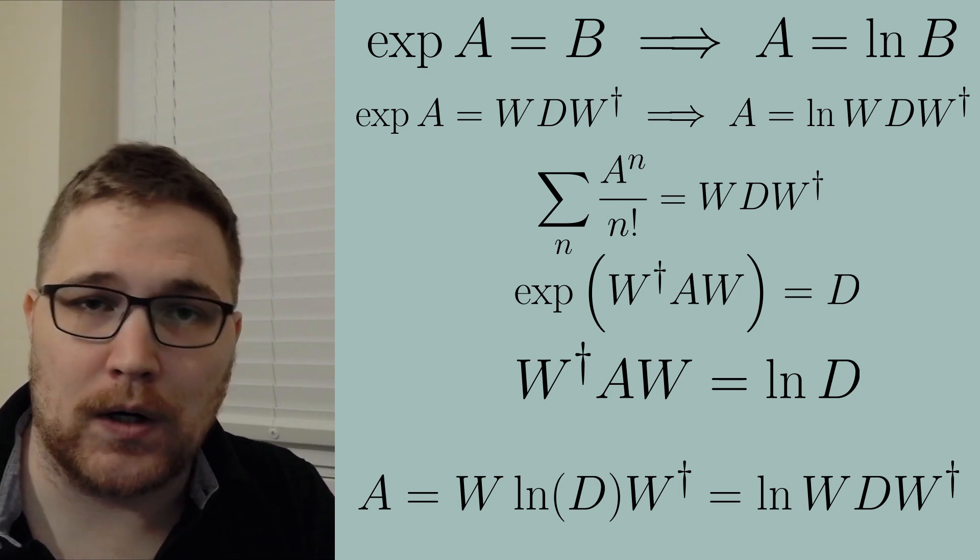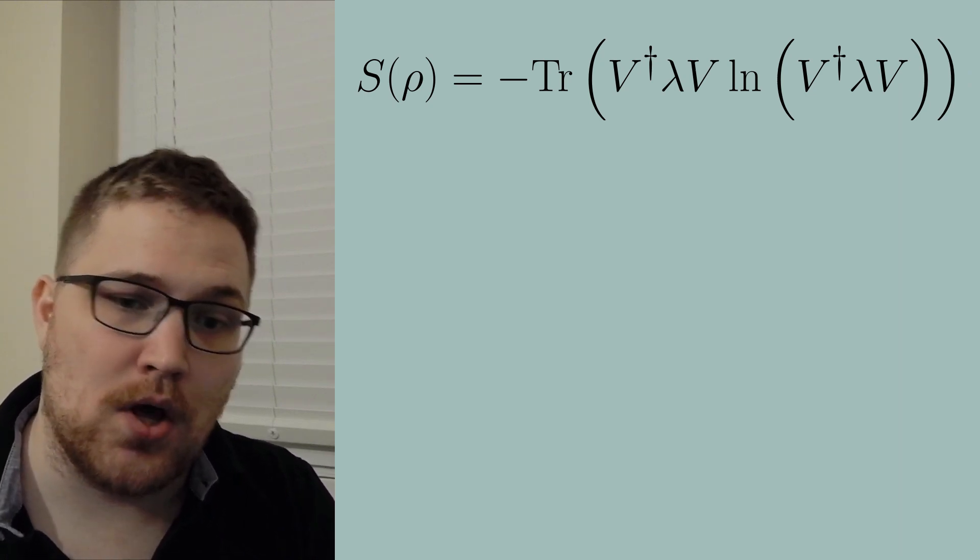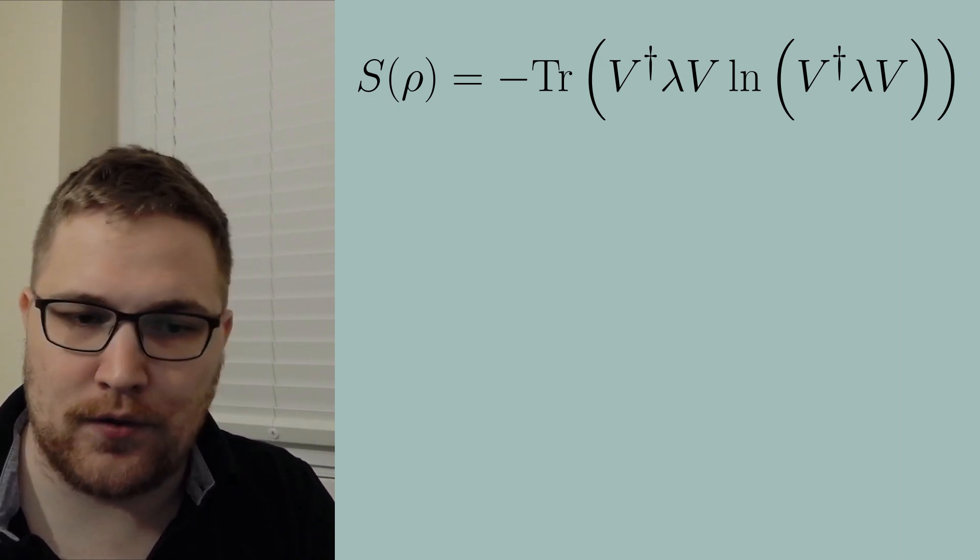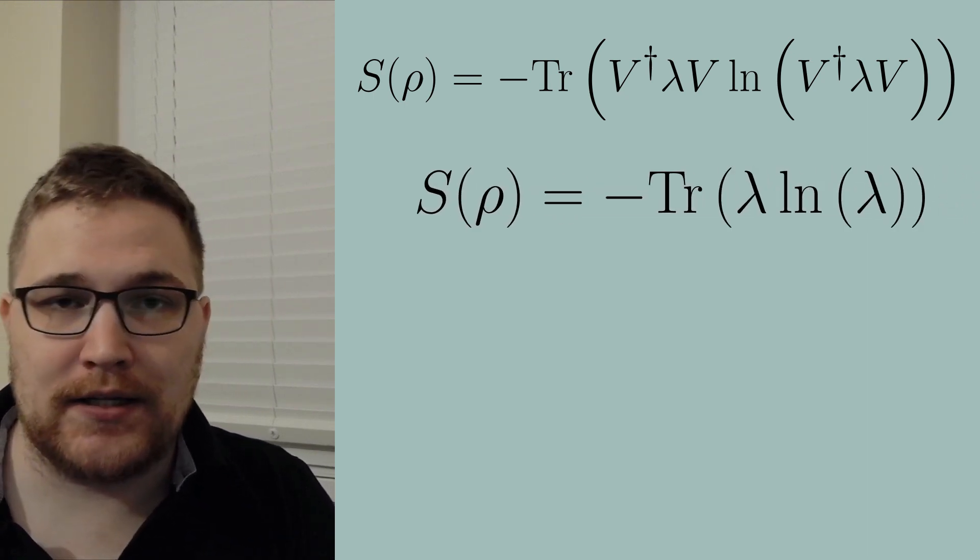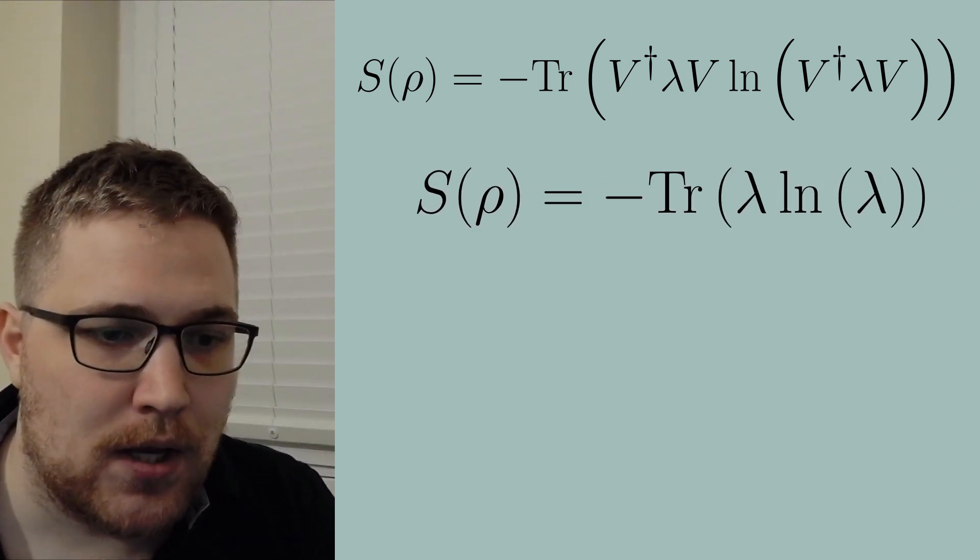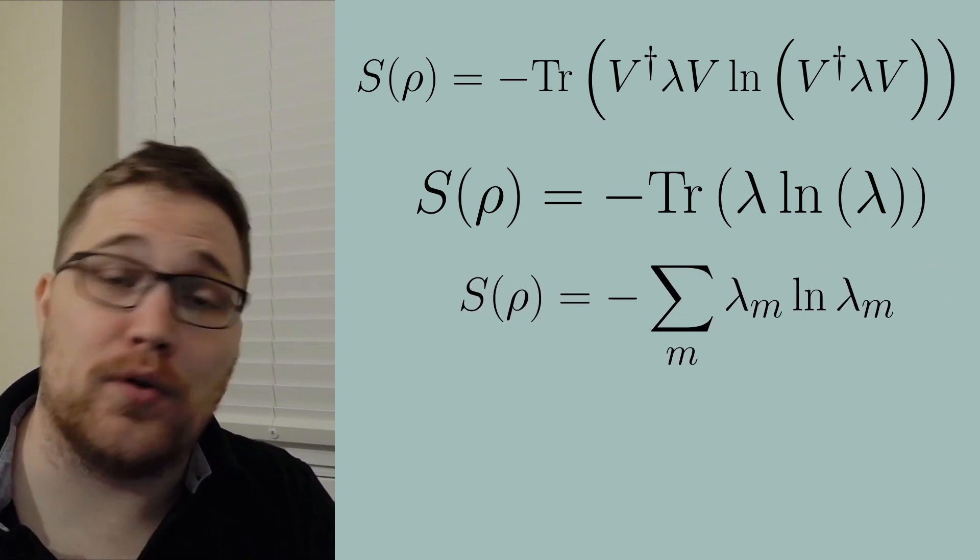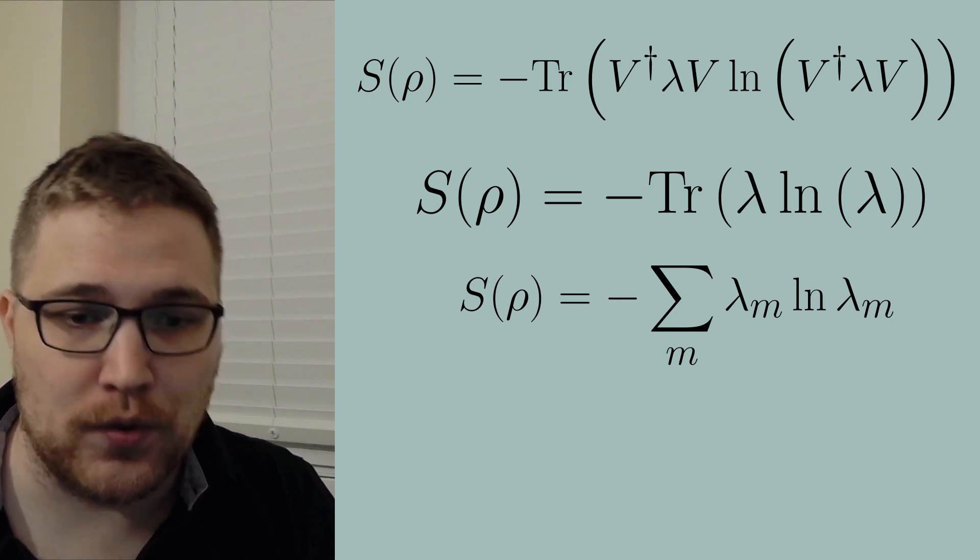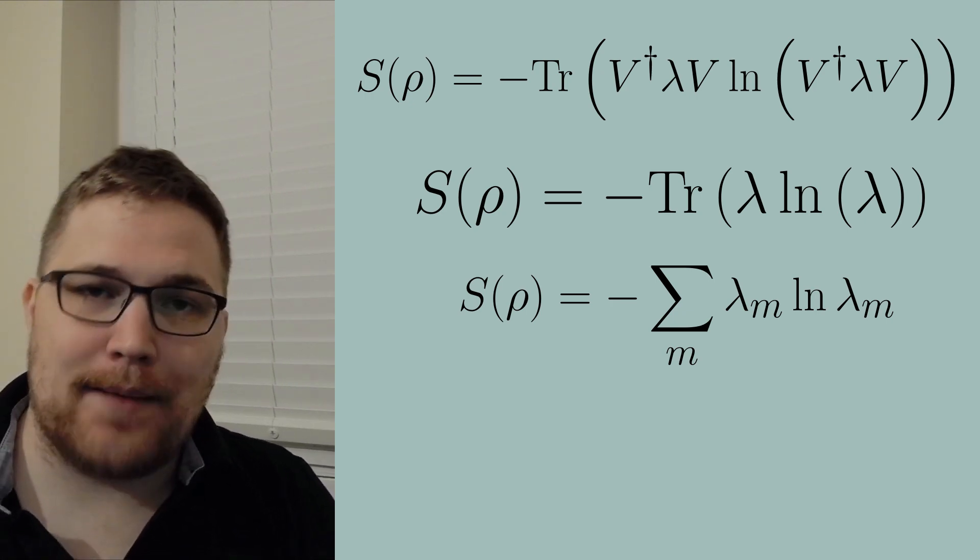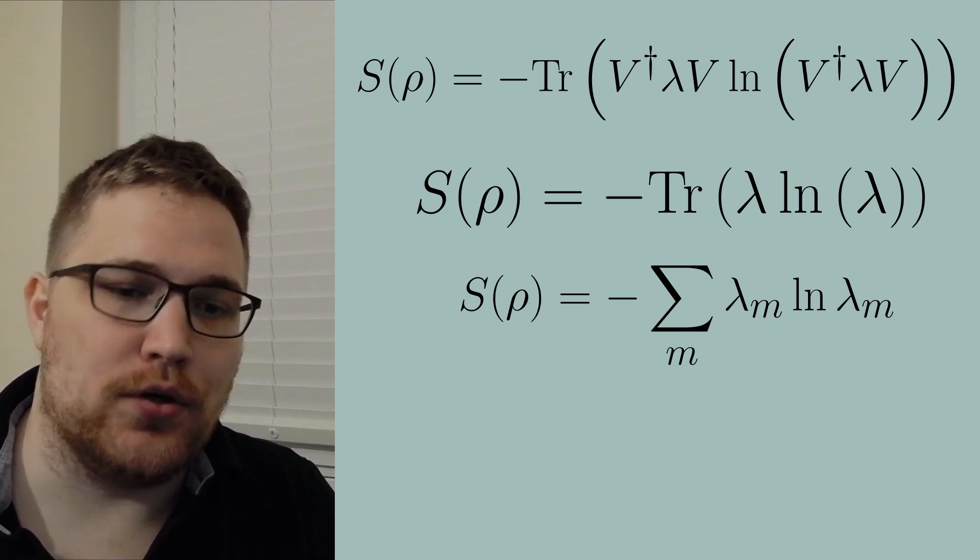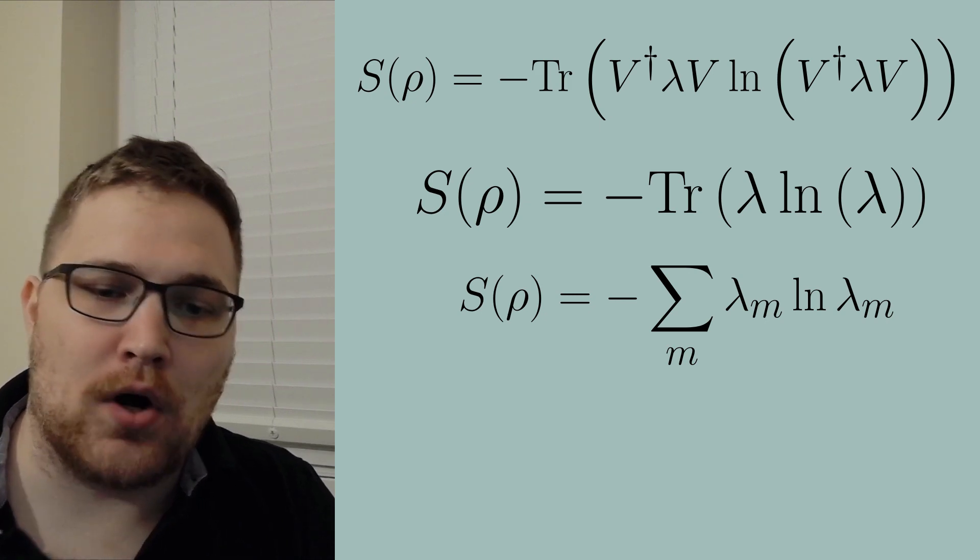So returning to our entropy equation taking the unitaries out of the logarithm we can then cancel all of the unitaries together by taking V dagger times V is equal to the identity or the other way around. So this allows us to write our entropy just as the Gibbs entropy or the Shannon entropy that we use in classical statistical mechanics where the λ_m's are the eigenvalues of ρ and the diagonal elements in particular of our matrix λ.